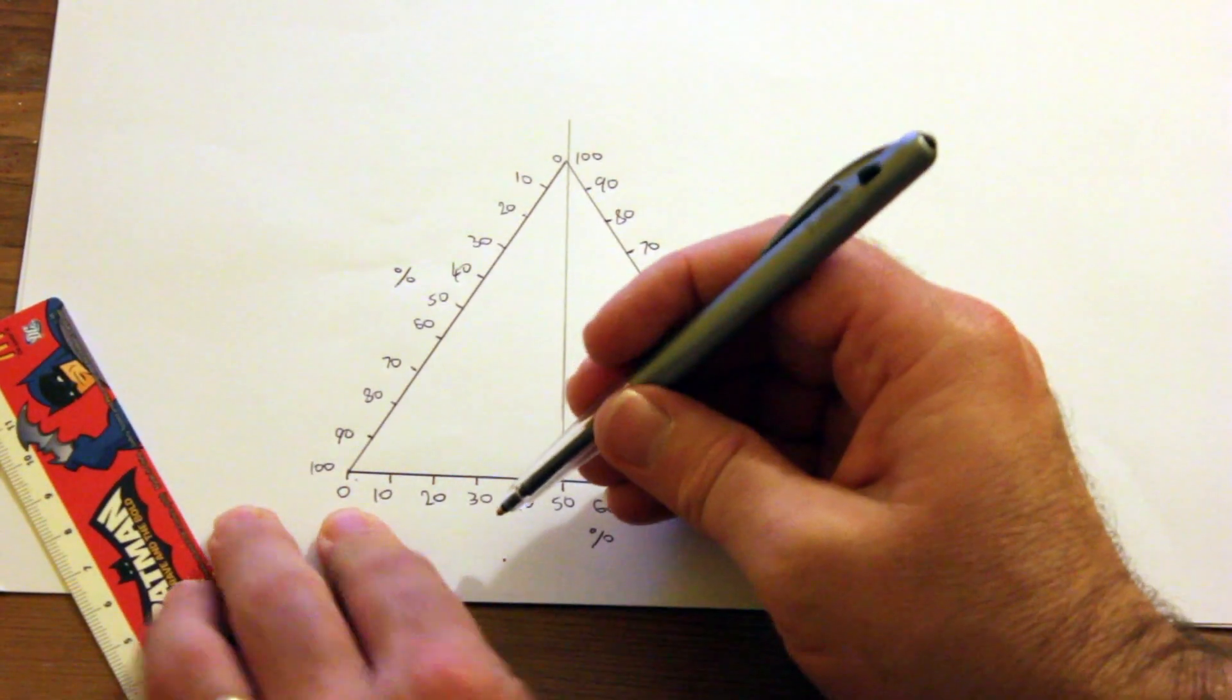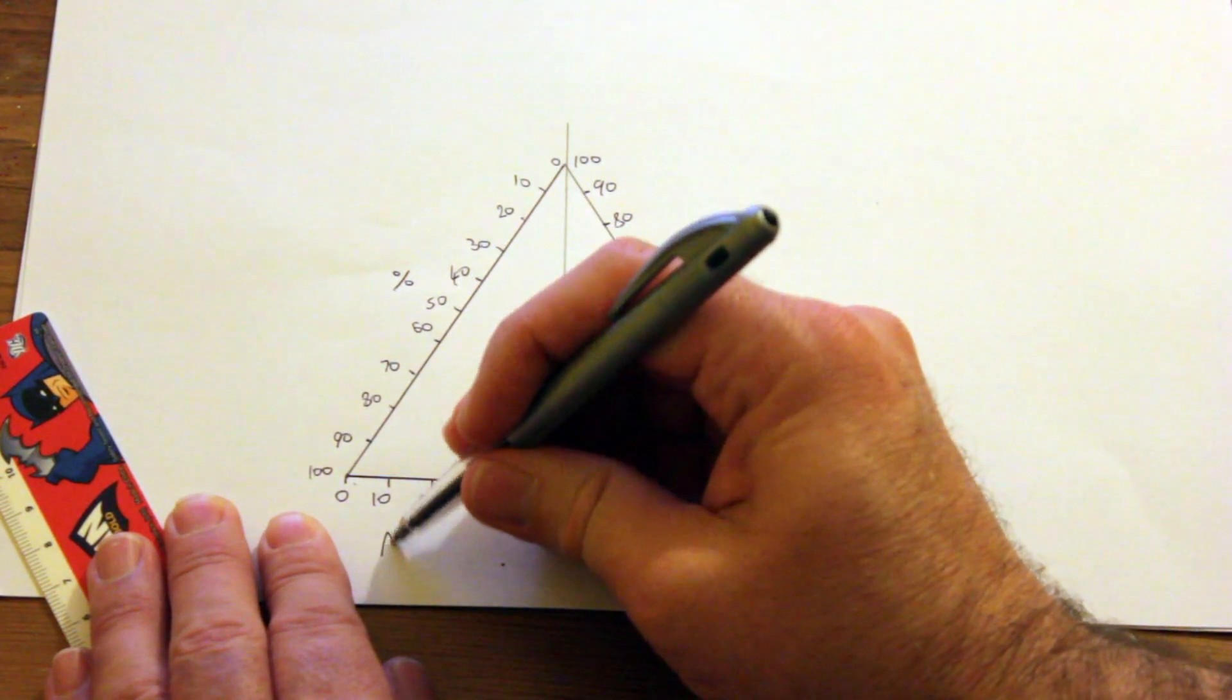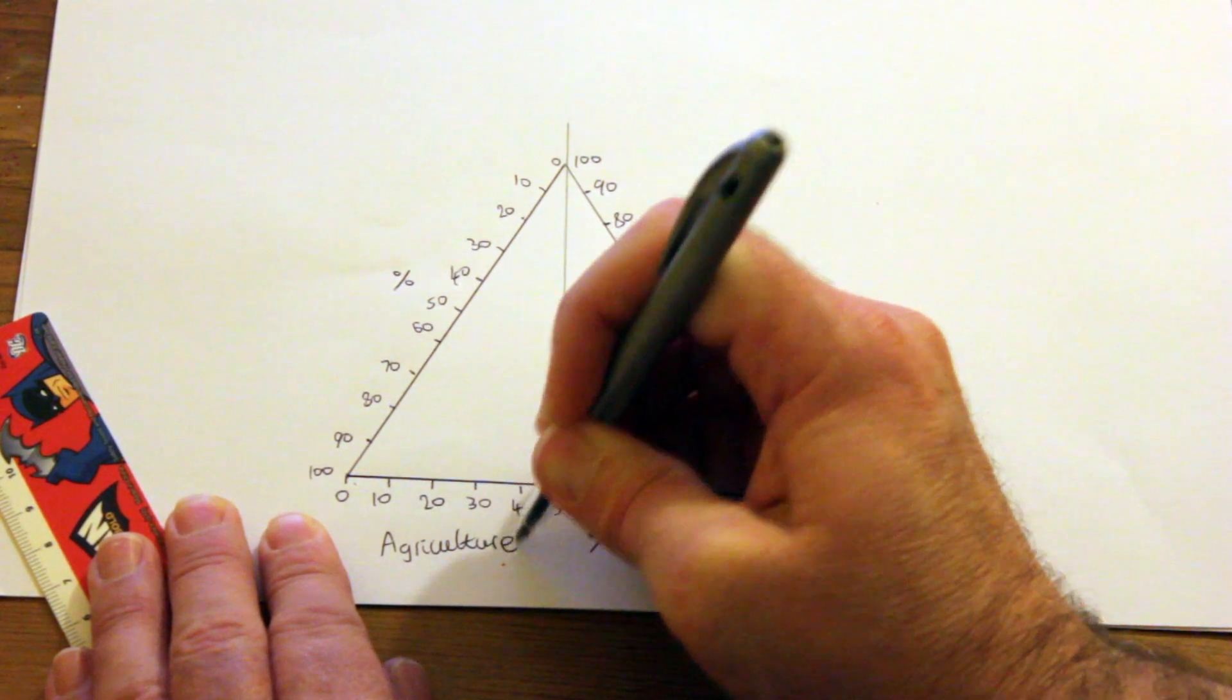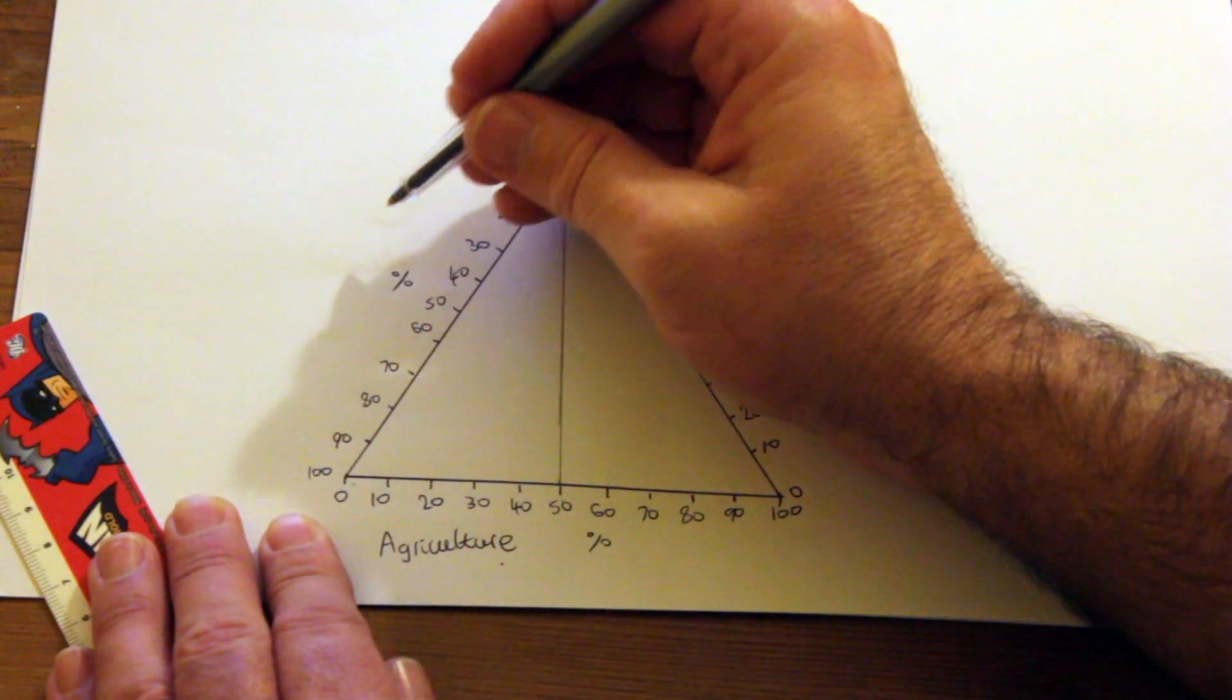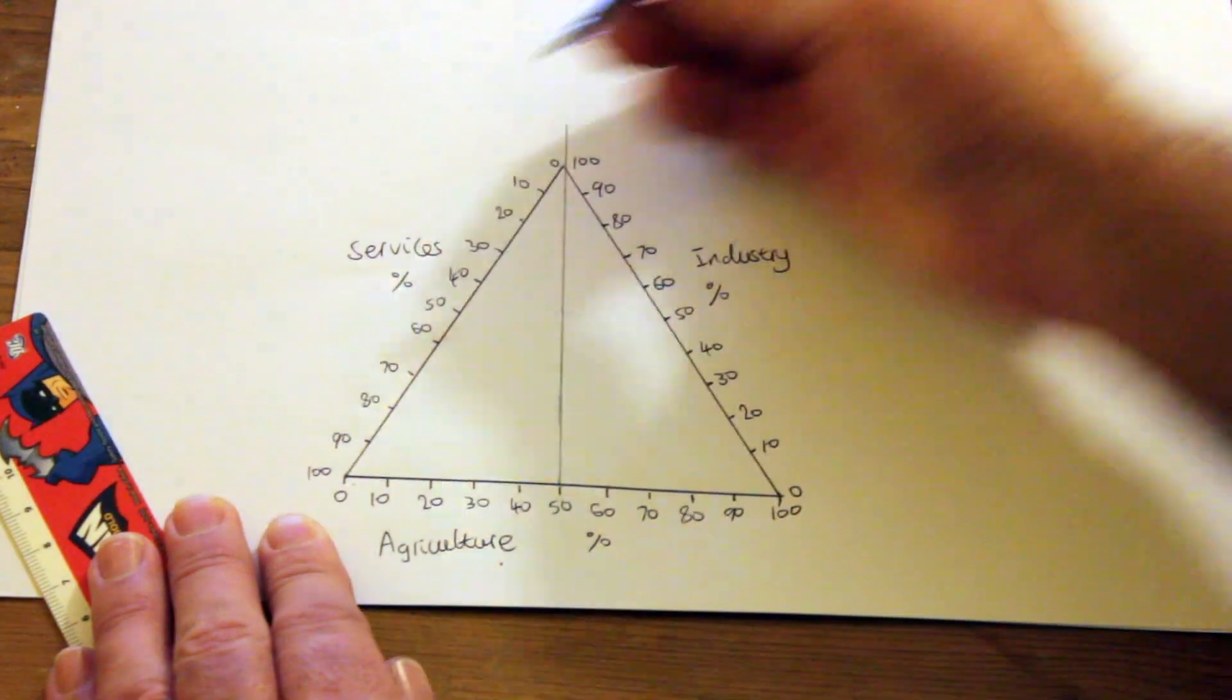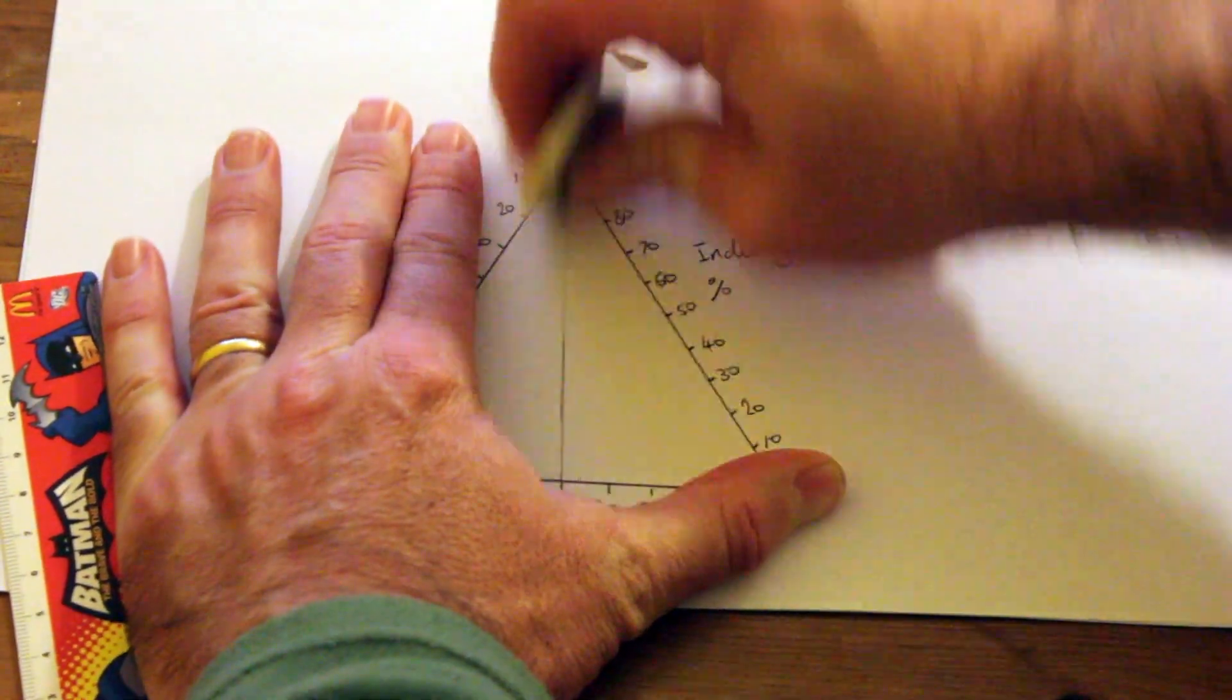We'll label our axes. We'll make the horizontal one agriculture, make this one industry on the right here, and on the left make this services. Now we can rub out this vertical line in the middle. We don't need it anymore.